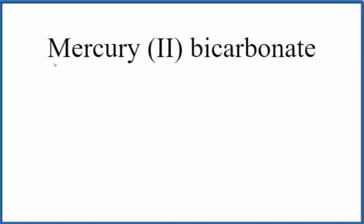In this video, we'll look at the formula for mercury (II) bicarbonate. First, we see the Roman numeral 2 in parentheses. That means mercury is a transition metal.